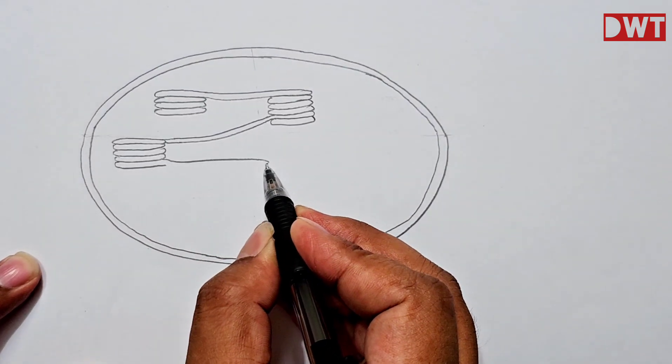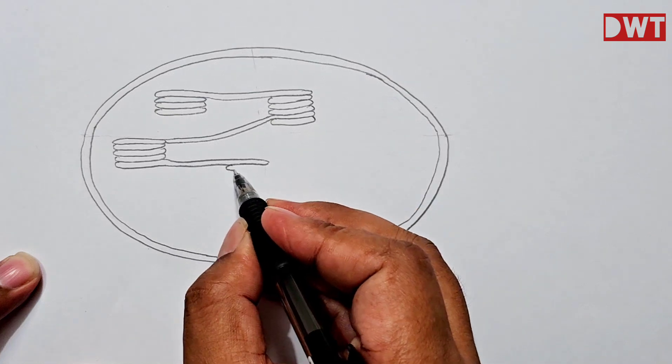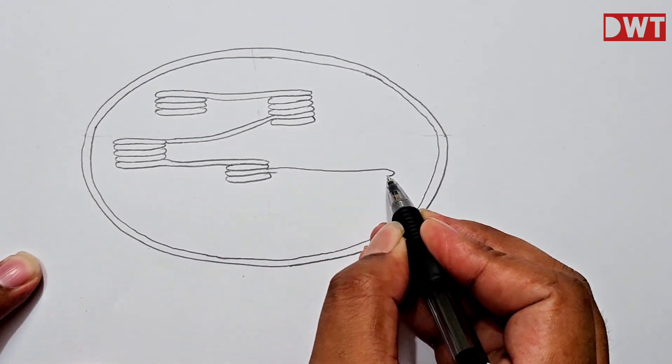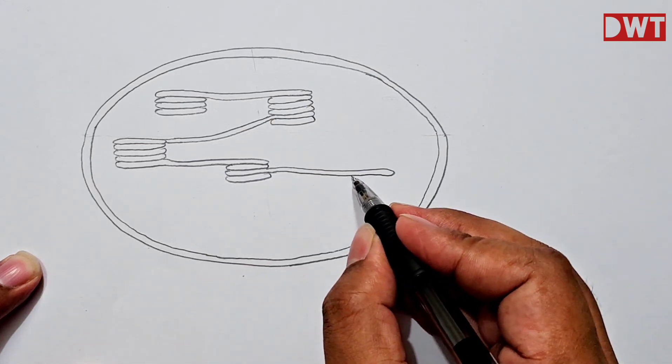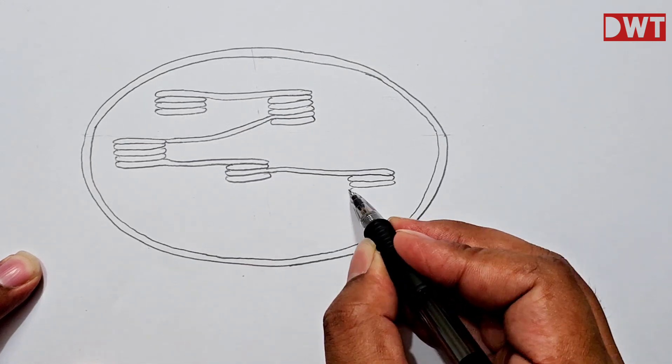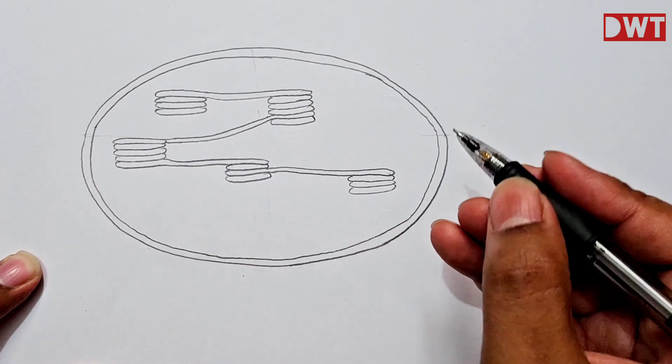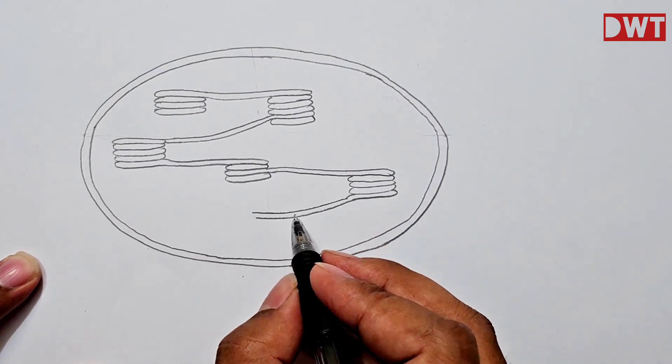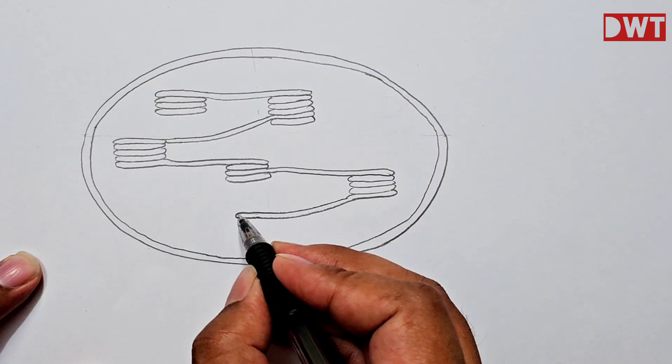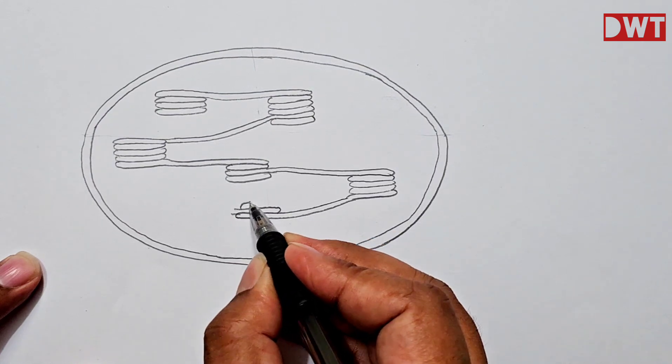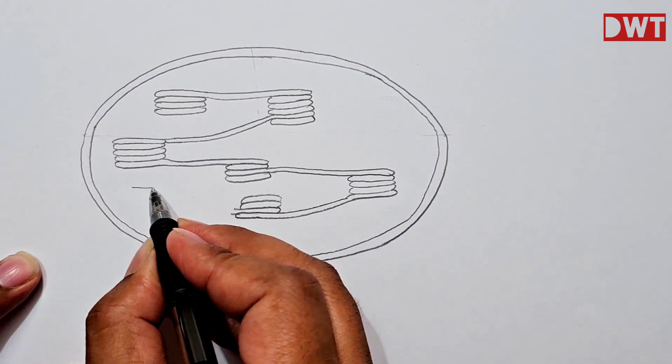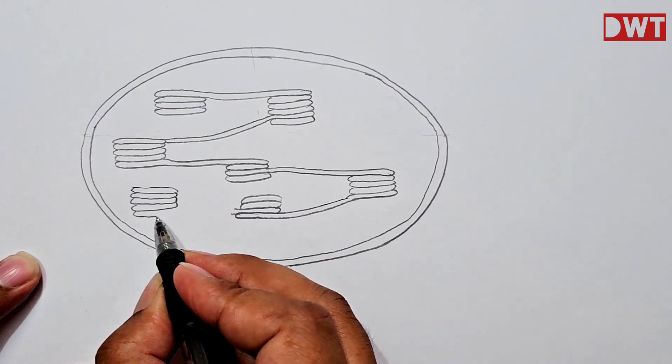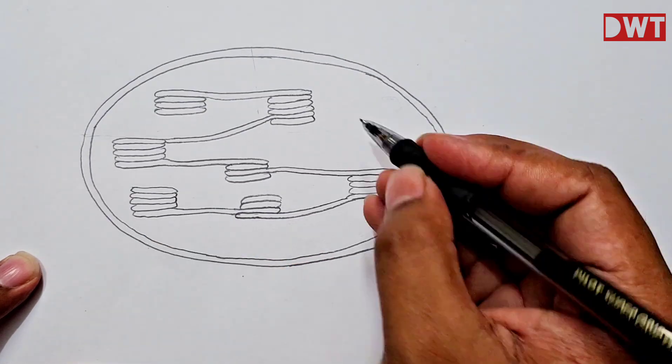The grana discs are connected through stroma lamelli. So there are a few grana discs that are connected through stroma lamelli. In our figure, we have to connect grana discs through stroma lamelli very carefully and we almost complete our drawing.